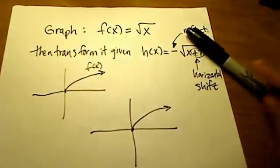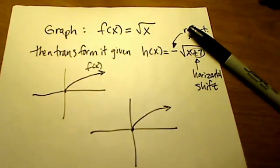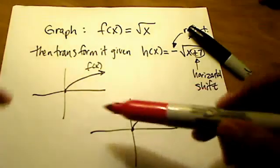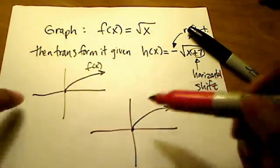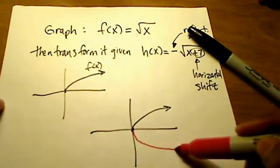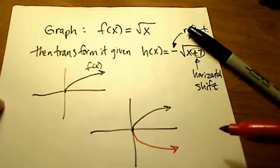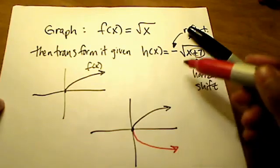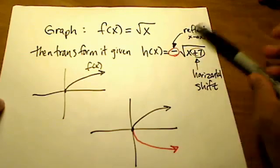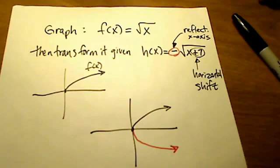The reflection over the x-axis is simply, think of it like holding a mirror on the x-axis. If you were to hold a mirror right here on the x-axis, then the reflection would look like this and I'll draw it in red for you. So this right here, this reflection is coming from that negative sign that we just had in our h(x) function.